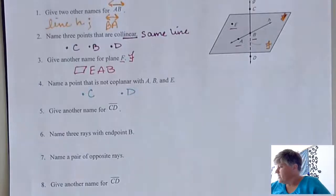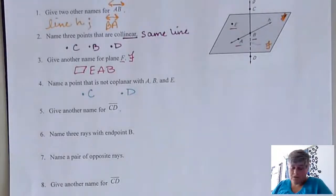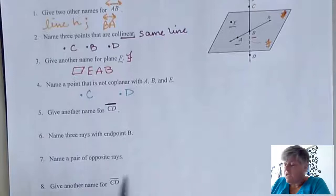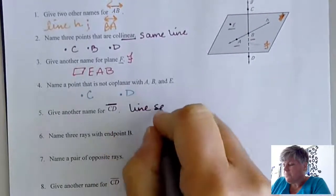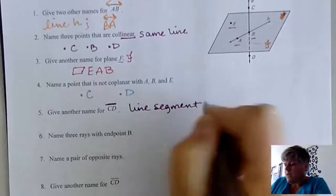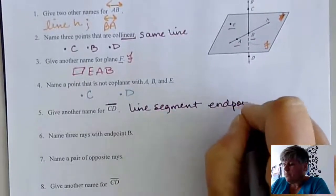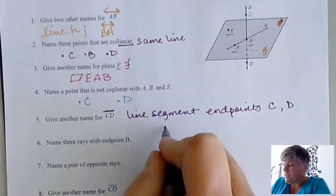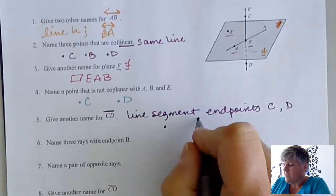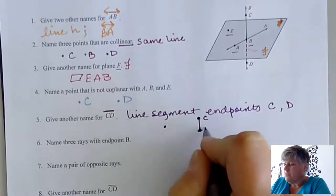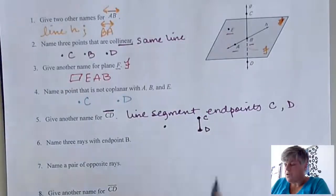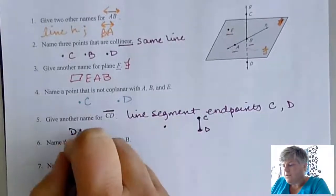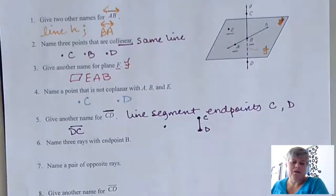And then the last question we're going to look at for this particular video is to give another name for CD. Now notice CD has just a single line over it. That again means that's a line segment. And the endpoints are C and D. So if we look at it, we've basically got this little line segment that starts here and goes there. And so another name for that, we go C to D or D to C. And we put that little line over it and that shows you that it is a line segment.